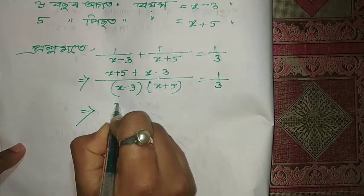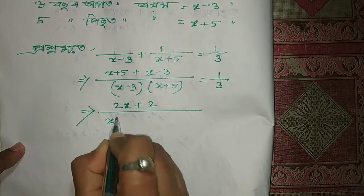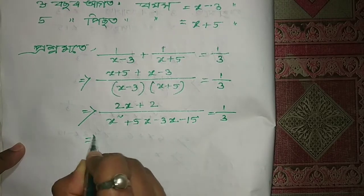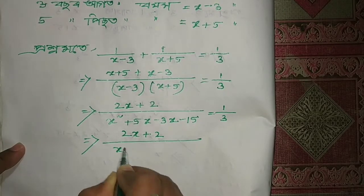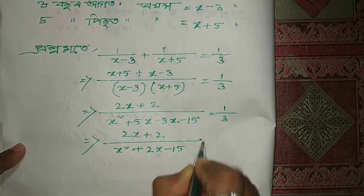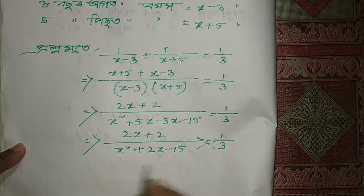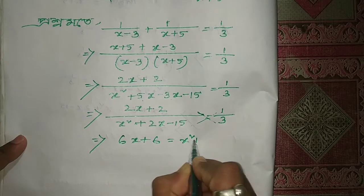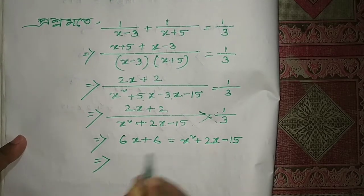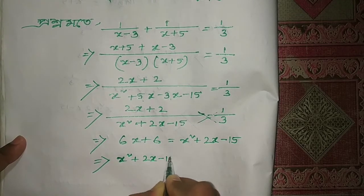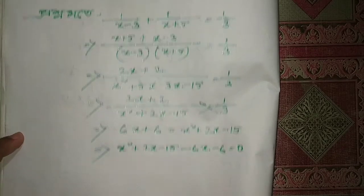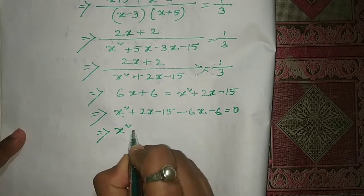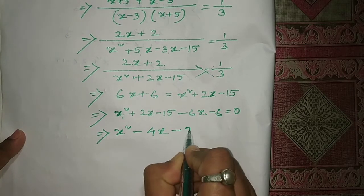We multiply x minus 3 equal to 1 by 3. We multiply x minus 3 equal to 2x plus 2. We multiply: x plus 5 times x minus 3 gives x minus 15 equal to 1 by 3. So we multiply to get x squared plus 2 divided by x, giving 5x minus 3x plus 2x minus 15 equal to 1 by 3. We get x plus 6 equal to 1 by 3, then 2x minus 15 equal to 1 by 3. So x squared, and plus 2x minus 6x, minus 4x is equal to minus 15 minus 6, minus 21, equal to 0.